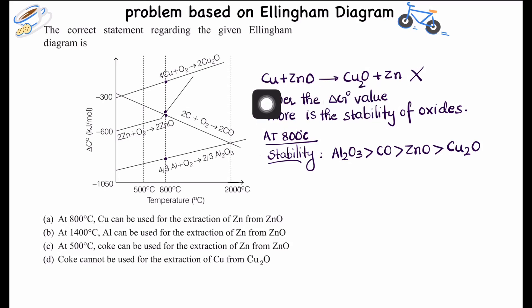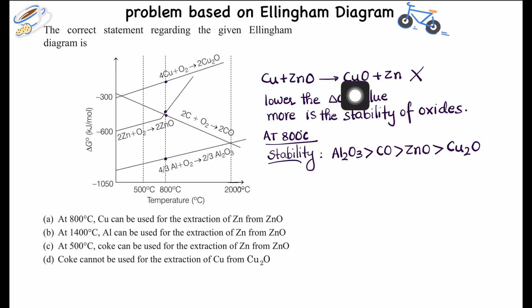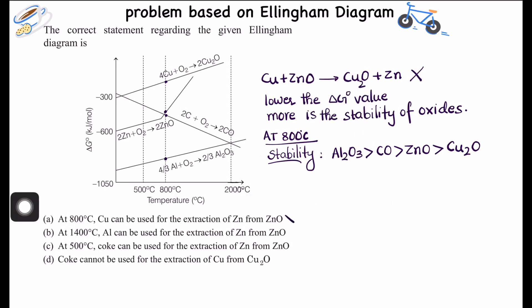Since ZnO is more stable than Cu₂O at 800°C, the reaction will not give a less stable product if it were to proceed. So the first option — copper reducing ZnO — is not feasible.